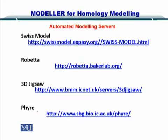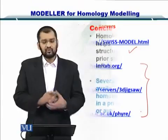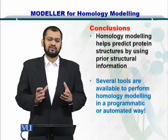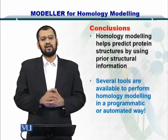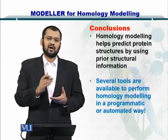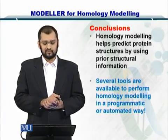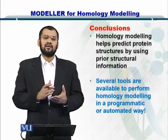Besides using Modeler, if you don't know Python, you can go for Swiss Model. Swiss Model is a very easy-to-use software and you can do all of this homology modeling using the graphical user interface. There are other tools which you can explore such as Robeta, 3D Jigsaw, and Fire — the links for each are provided. In conclusion, homology modeling is a lengthy process and the pipeline contains several steps. Modeler can help you predict structures from sequences, but if Python programming is unfamiliar, you can use Swiss Model to do it in an automated and graphical way.